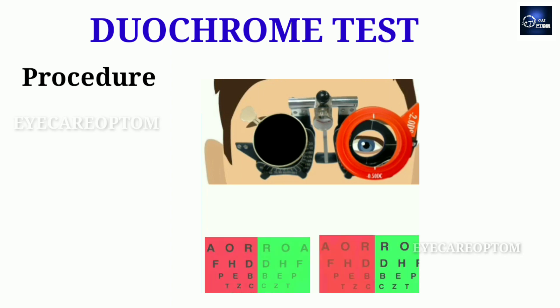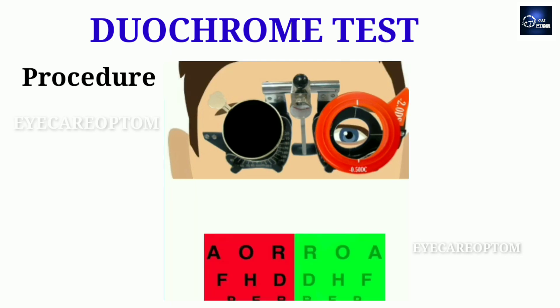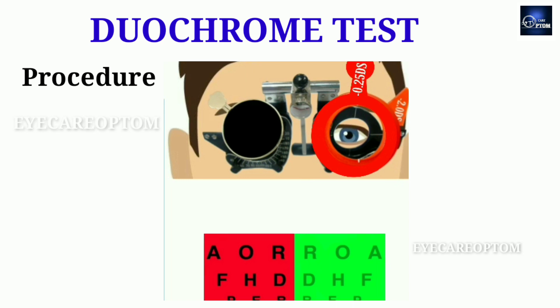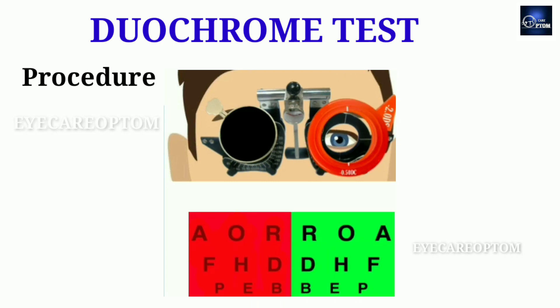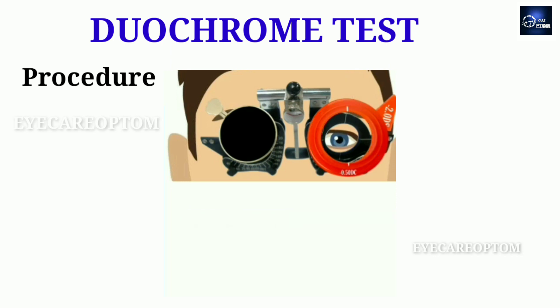According to the patient's response, we add plus or minus lenses to obtain clear vision on both red and green backgrounds. If the patient reports red is clearer than green, add minus power in 0.25 diopter steps until both red and green are equally clear. If the patient reports green is clearer than red, add plus power in 0.25 diopter steps until both are equally clear. Finally, add this balanced power to the subjective refractive power obtained before.